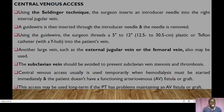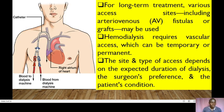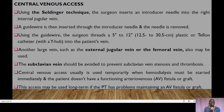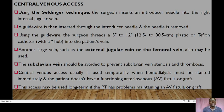One access option is central venous access. On the diagram, you can see blood going to the dialysis machine via a red tube, and blood returning from the dialysis machine via a blue tube, going back to the right atrium of the heart, where it is pumped to the lungs for oxygenation and then returned to the heart for distribution to the rest of the body. For central venous access, the Seldinger technique is used, where the surgeon inserts a needle into the right internal jugular vein.